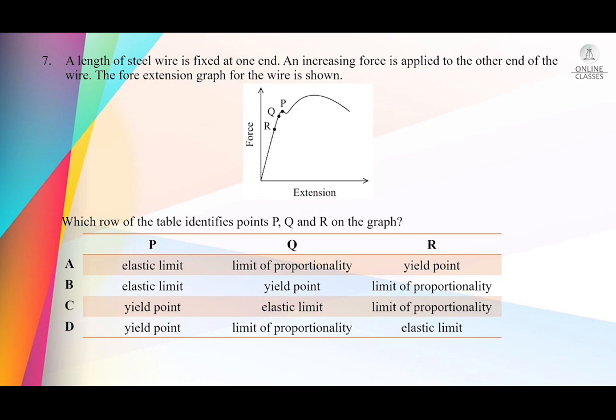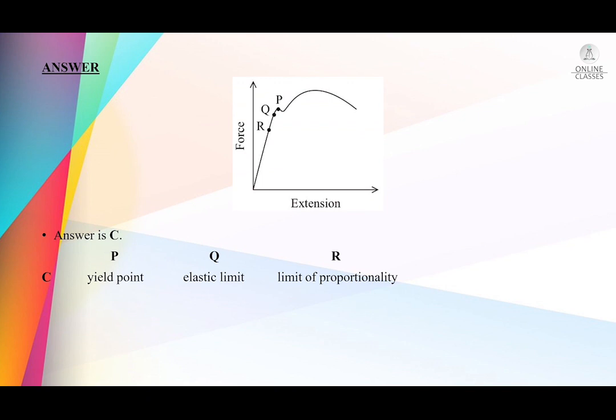R is the first point in the straight line part of the graph, so R is the limit of proportionality. Q is just above R, so Q is the elastic limit. P is the yield point. So the answer is C: P is the yield point, Q is the elastic limit, and R is the limit of proportionality.